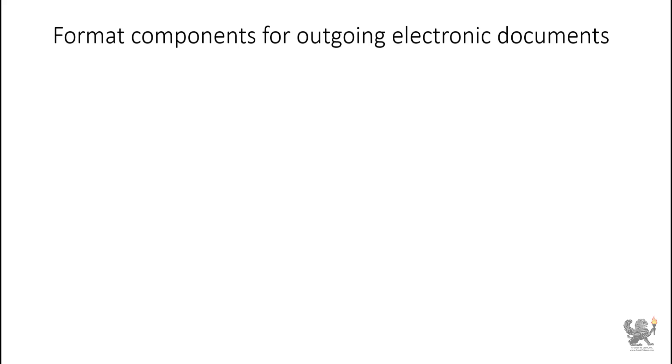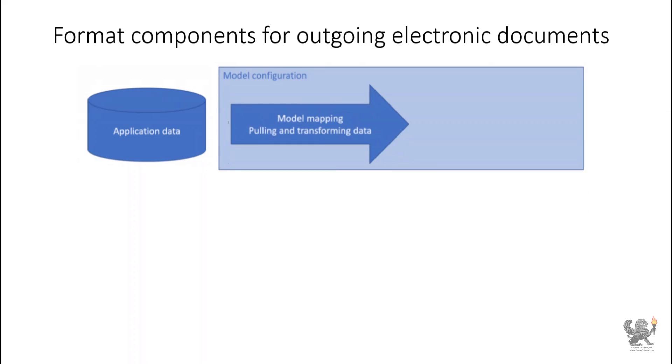For outgoing electronic documents, a format component is the scheme of the reporting output that will be generated at runtime. A scheme consists of a format that defines the structure and contents of the outgoing electronic document generated at runtime. You also need data sources as a set of user input parameters, and a domain-specific data model that uses a selected model mapping. A format mapping is a set of bindings of format data sources to individual elements of a format, specifying at runtime the data flow and rules of format output generation.